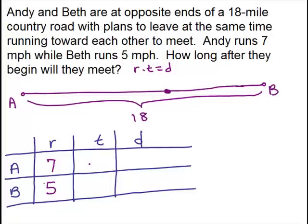What about their time? I know nothing about their time except that they leave at the same time and then they meet each other, which actually is a lot of information. It means whatever their time is, it's the same amount of time. They're both running for the exact same amount of time. So I'm going to define x to be Andy's time, but it's the same for Beth's time.